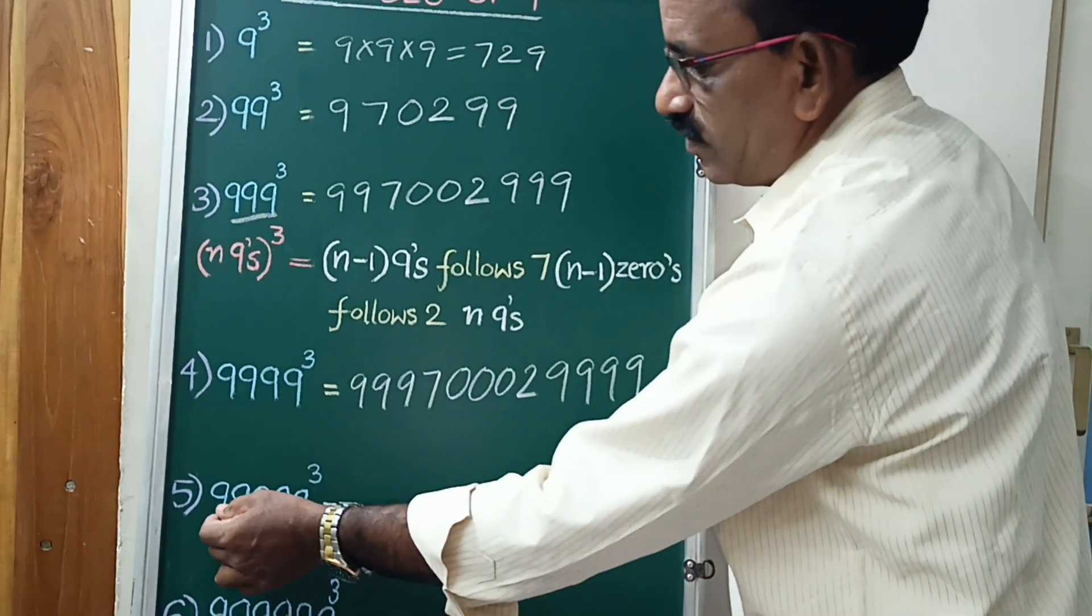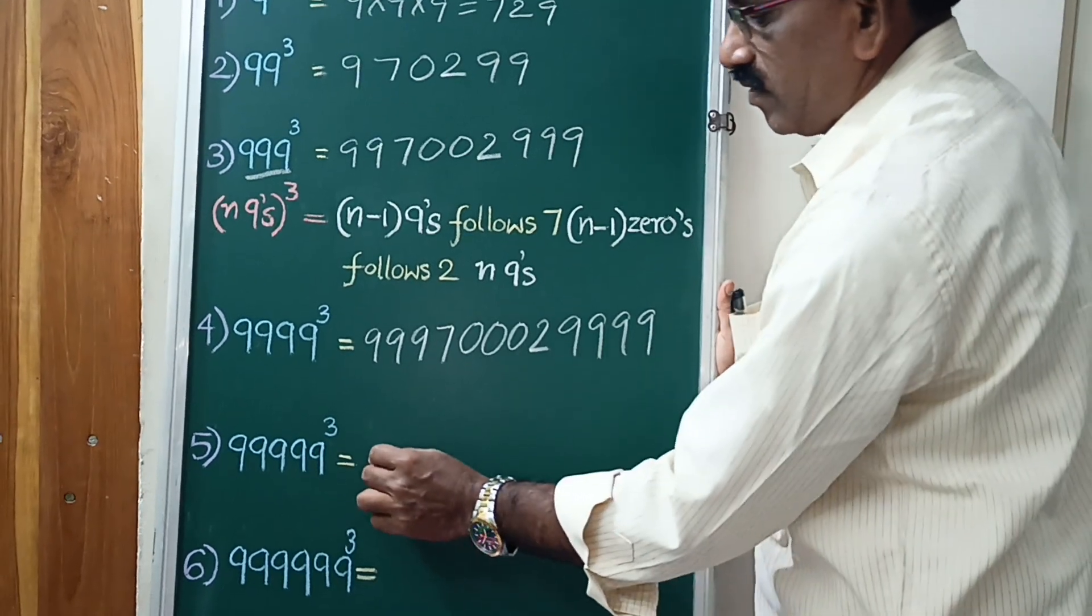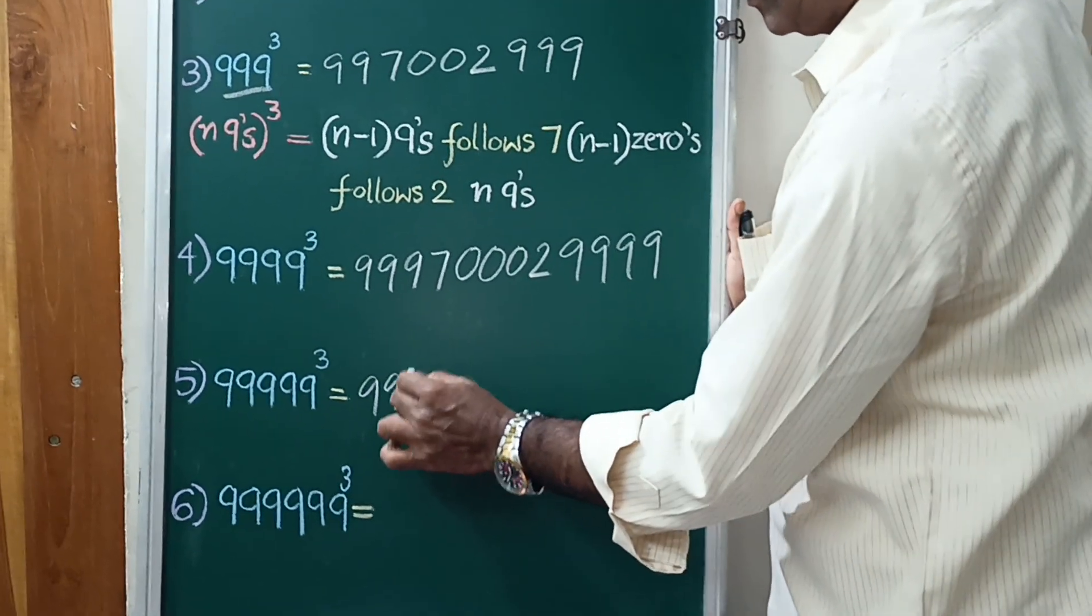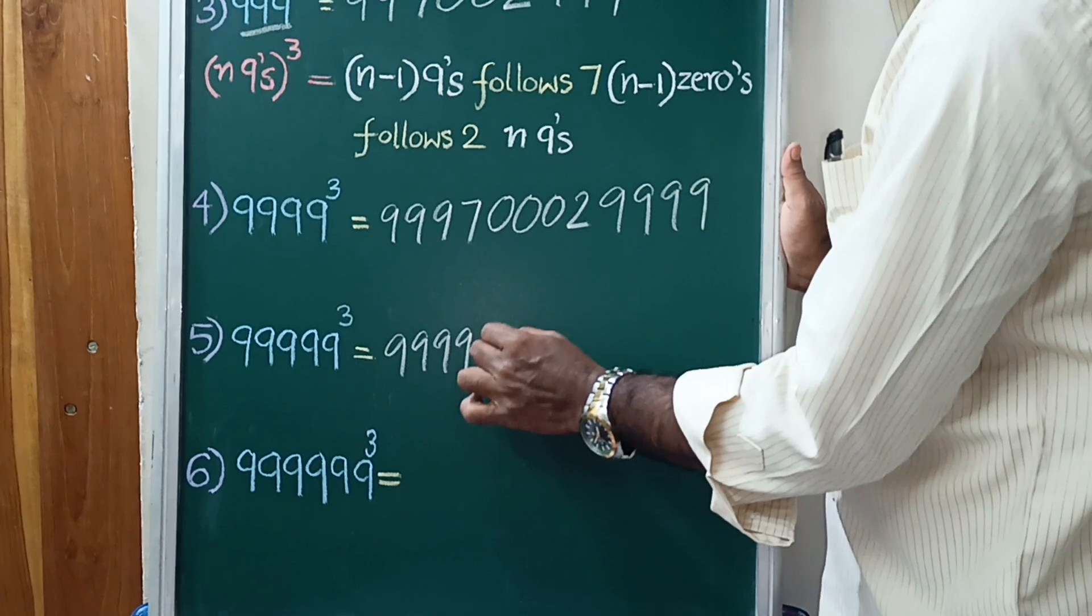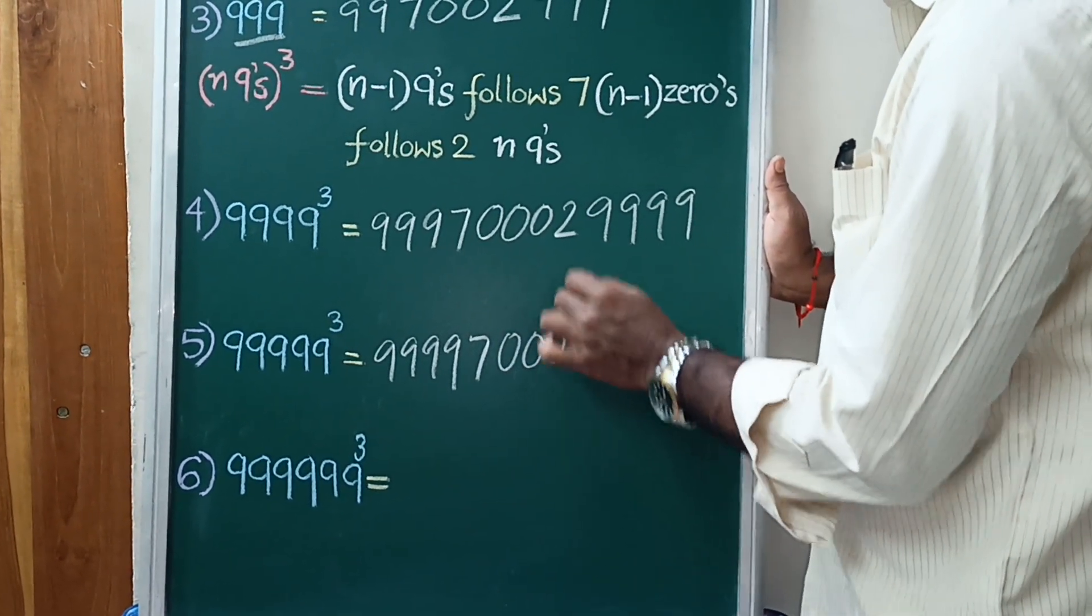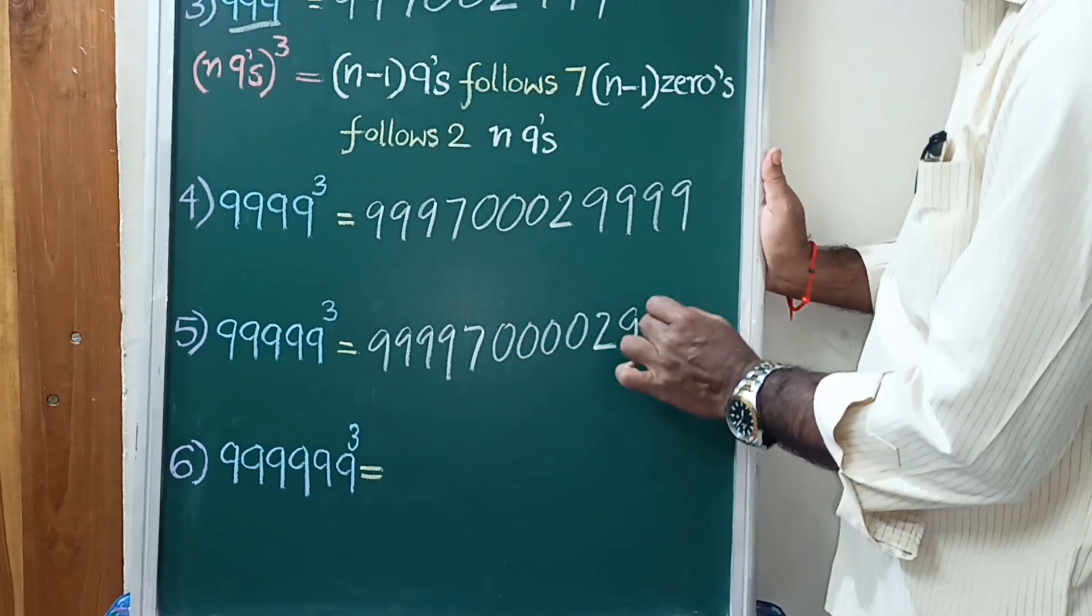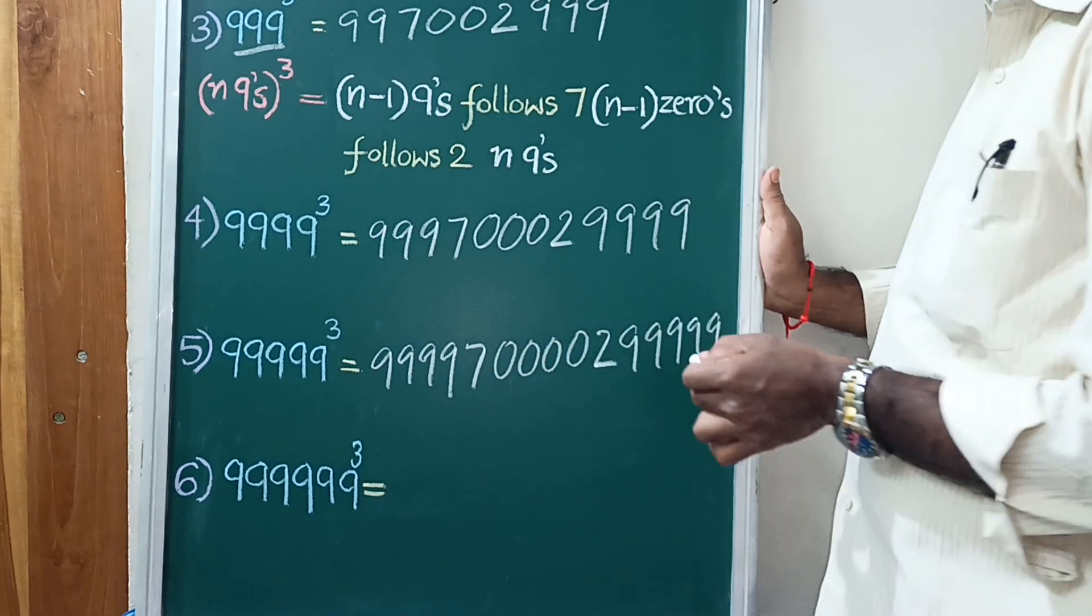Next, 99999 cube. 4 9's, follows 7, 4 0's. 2, then 5 9's: 1, 2, 3, 4, 5. That is the answer.